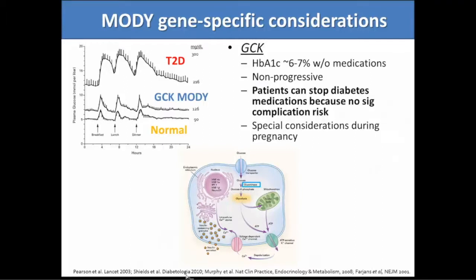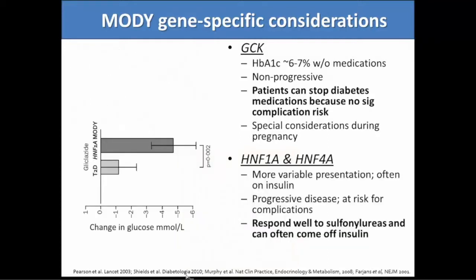There are some special considerations during pregnancy where you have to determine whether to treat the mom — it actually depends on whether the fetus carries the mutation. For HNF1-alpha and HNF4-alpha, these are transcription factors that work in the beta cell. There's a lot more variability in presentation than GCK. Patients will often be on insulin when diagnosed and are at risk for complications since it's a progressive disease, but they can often be treated with sulfonylureas.